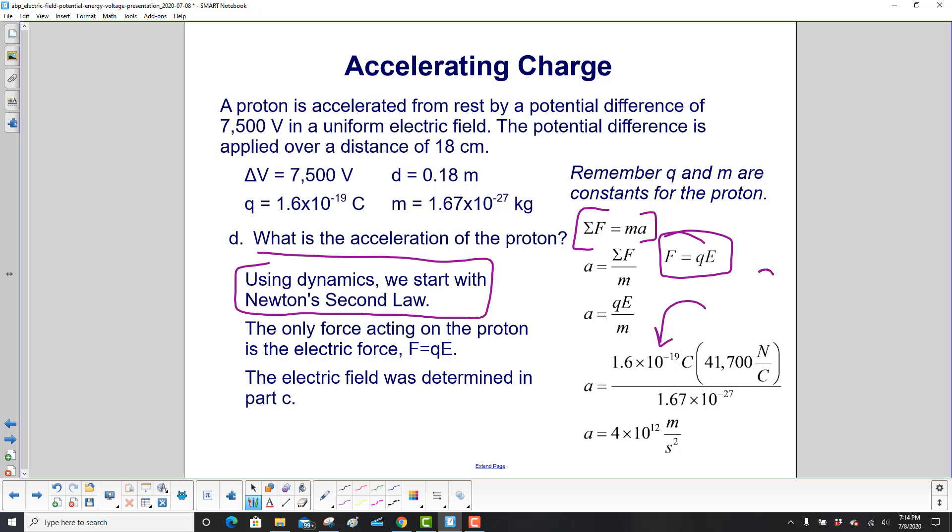Here's q. Here's the electric field that we found out. And what else? Here's the mass of the proton that other people found out. You do the numbers, and the acceleration, of course, comes out to be exactly the same. 4 times 10 to the 12th meters per second squared.